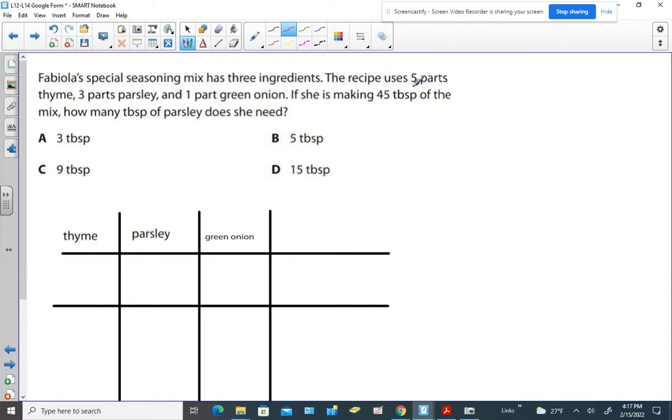So let's throw in the numbers. We have five parts thyme, we have three parts parsley, and one part green onion.